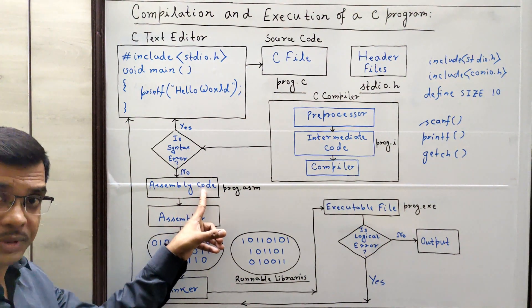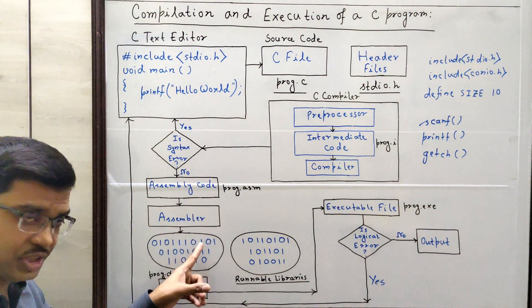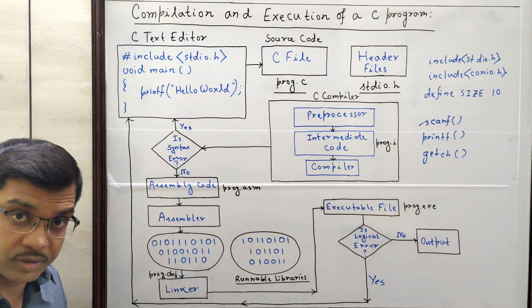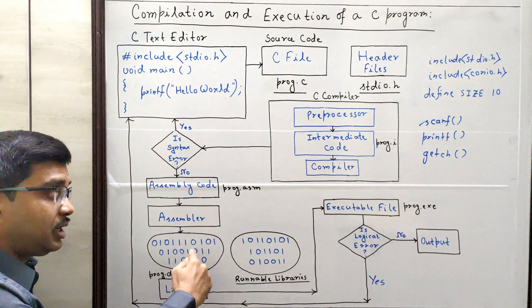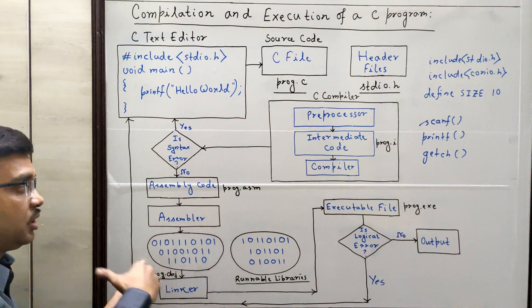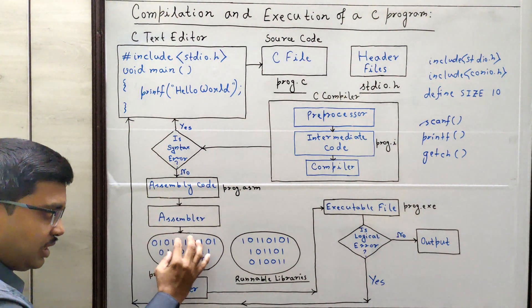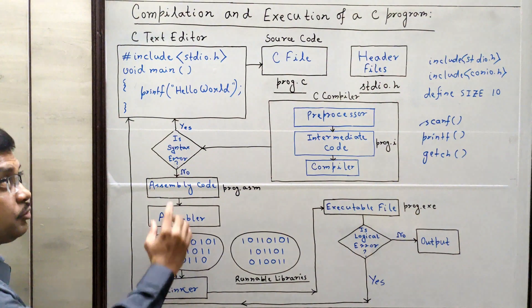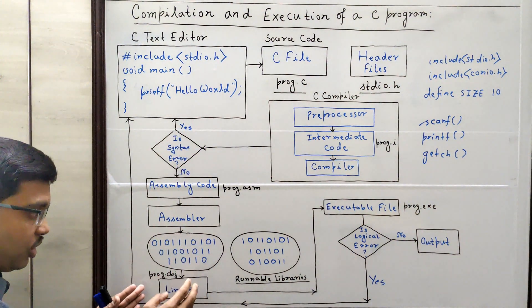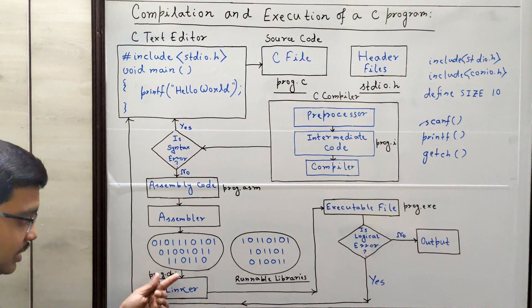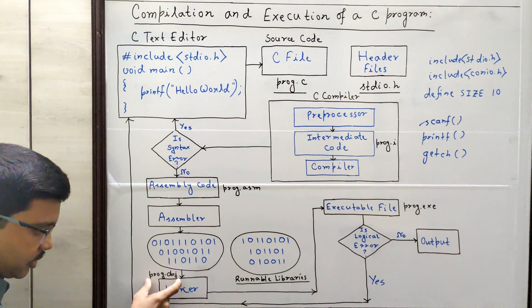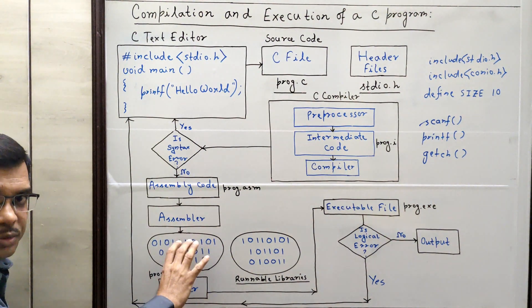Since it is an assembly language code, it is not understandable by the machine — because as I have already mentioned in previous videos, the machine only understands zeros and ones. So we have to convert this assembly code to machine code. Who will convert it? It is the assembler, which will convert the assembly-level code to machine code. Now your source code has been converted to a sequence of zeros and ones, and that is called machine code. This machine code will be saved with the extension .obj. So the name of the file is now program.obj, which is an object code.